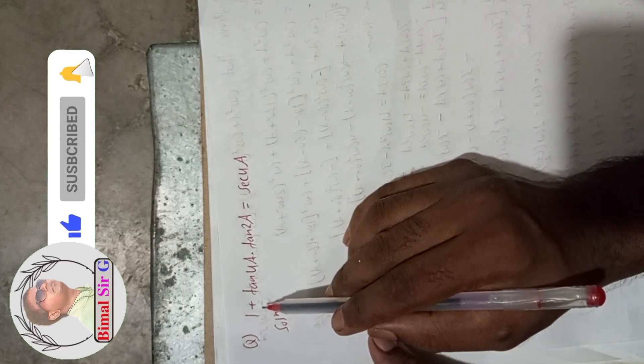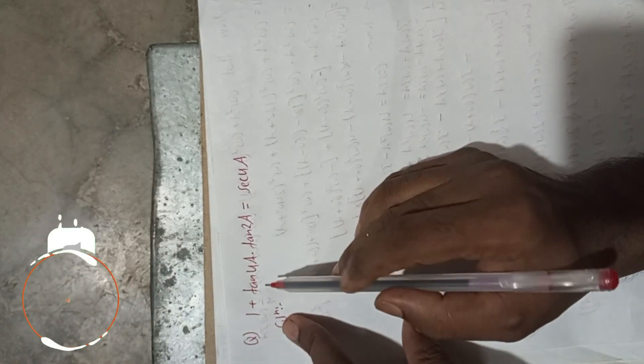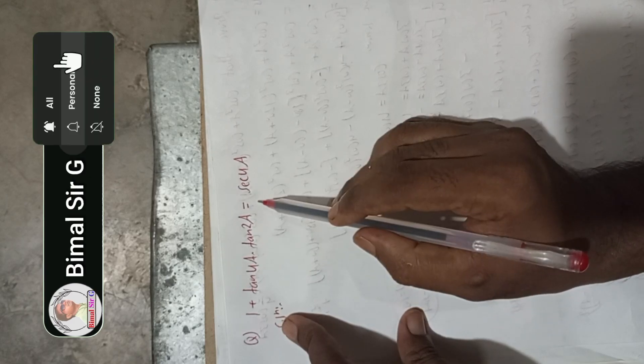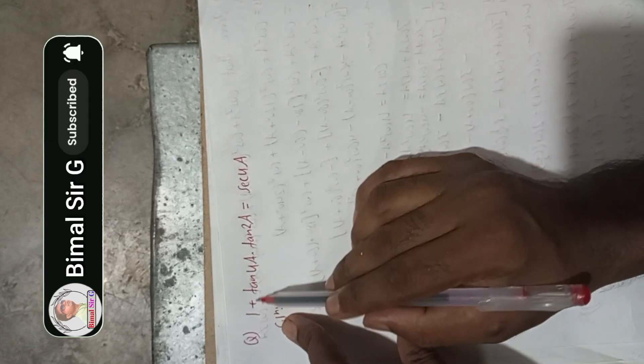Hello everybody, welcome back to Bimal Sir G YouTube channel. Now I am going to solve this OPT maths question: 1 + tan(4a) × tan(2a) = sec(4a). We have to prove this.